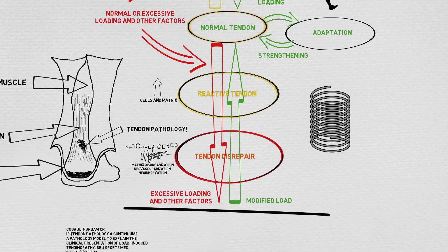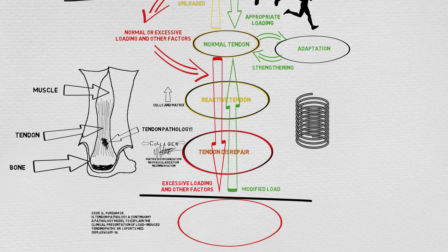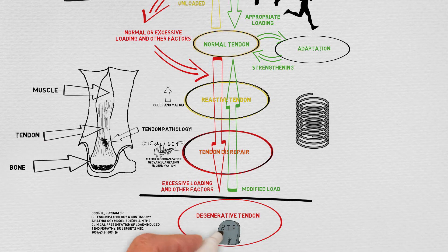In the degenerative stage, we start to see cell death in the affected portion of the tendon. However, rehab can still target the unaffected part of the tendon, so all is not lost.